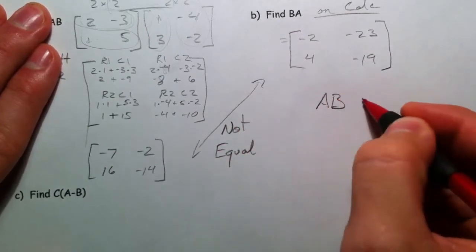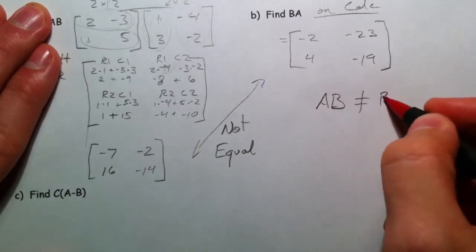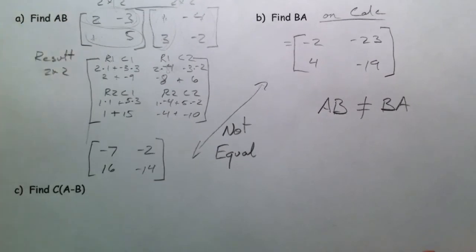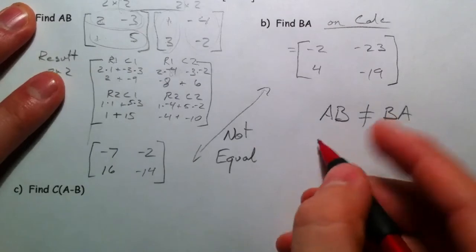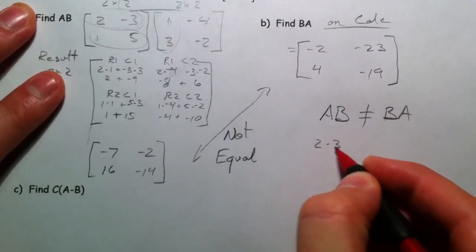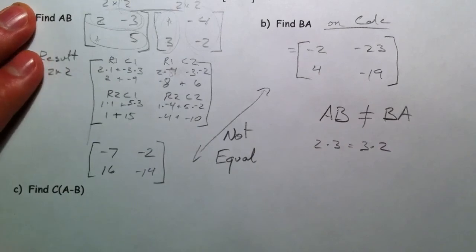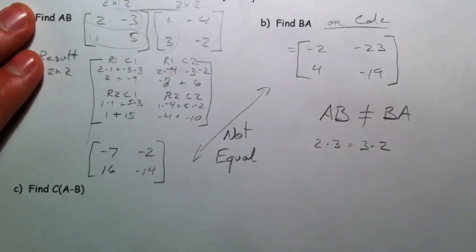A times B not equal to B times A. Sometimes it might be, depending on what you're doing. But in this case, no. And I just bring it up because usually 2 times 3 is equal to 3 times 2. We call it commutative. But matrix multiplication is not commutative.